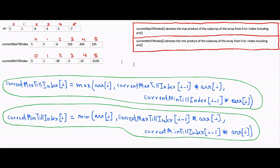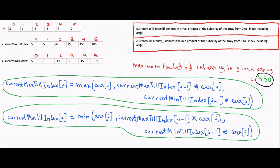Our answer will be the overall maximum of the current max till index array, which is 450. So for this array, the answer is 450. This solution takes O(n) time complexity and O(n) space complexity. We can reduce the space complexity to O(1) by using three variables — global max product, current min product, and current max product — and updating global max product whenever we calculate the current max and min products.